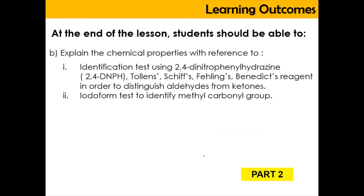In this video, we're going to look into the identification test using 2,4-dinitrophenylhydrazine, or known as 2,4-DNPH, Tollens, Schiff, and Fehling's reagent. This is used to distinguish aldehyde and ketone from other organic compounds. We're also going to look into the iodoform test to identify the methyl carbonyl group. So without any further ado, let's look into the tests one by one.